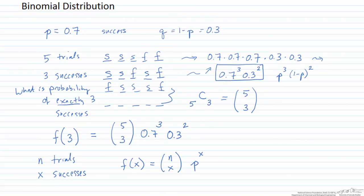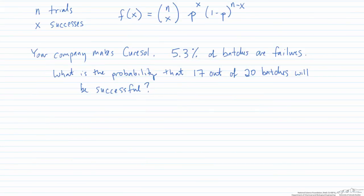So I have an example here. You work for a pharmaceutical company that makes a pharmaceutical product named Curezol. 5.3% of all batches are failures. What is the probability that 17 and exactly 17 out of 20 batches will be successful?